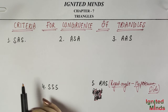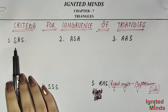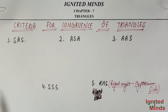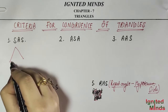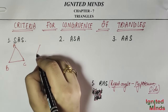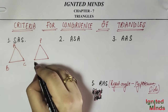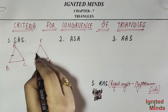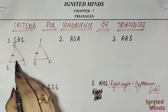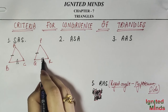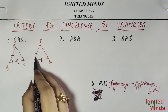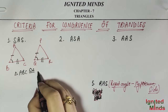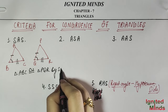Let's start with the first one. When we have two triangles to prove congruent, we use the first criteria: Side Angle Side. So we can say Triangle ABC is congruent to Triangle PQR by SAS.